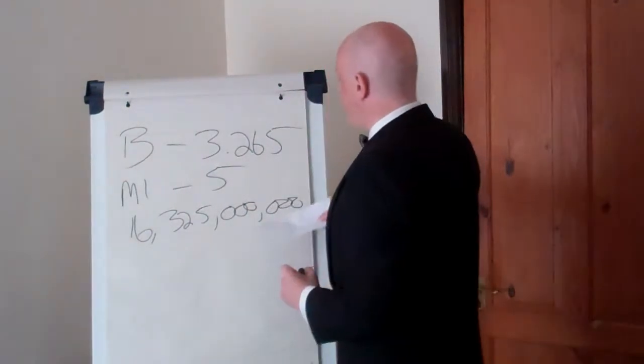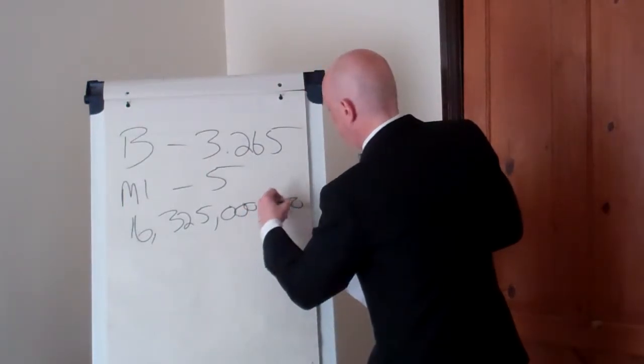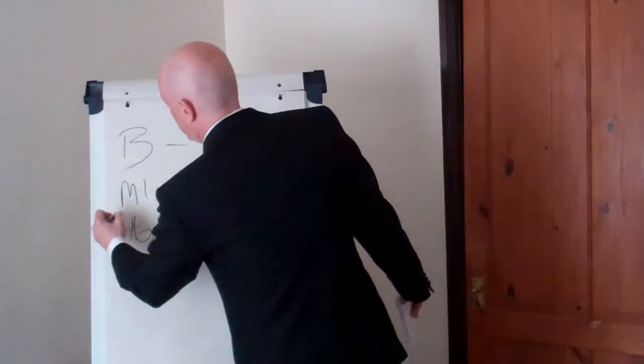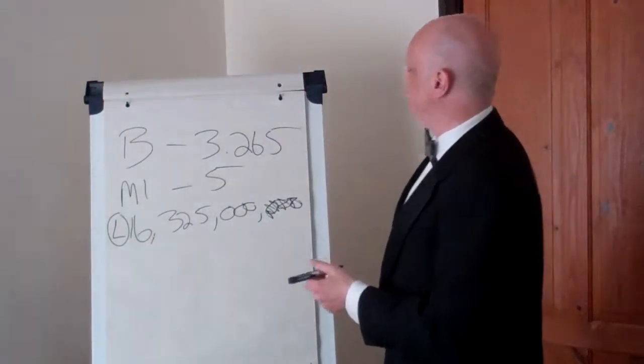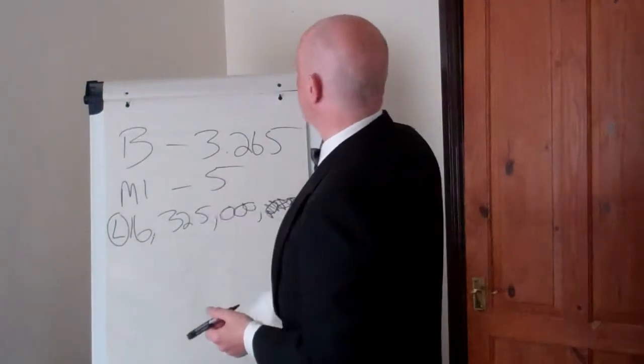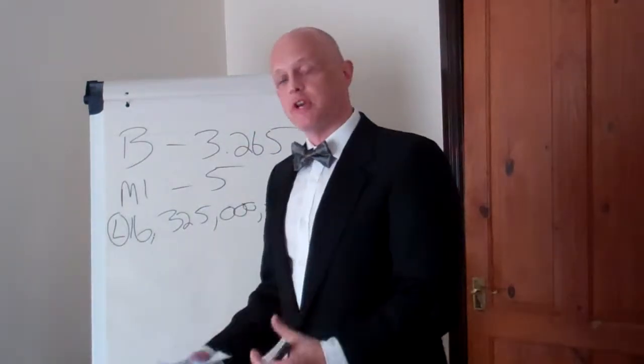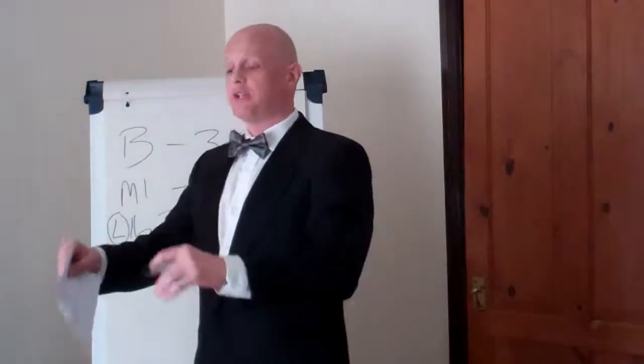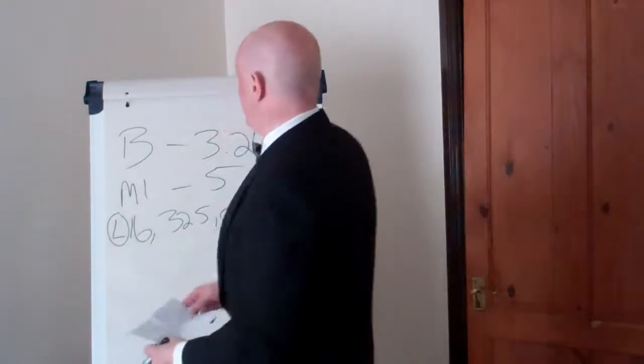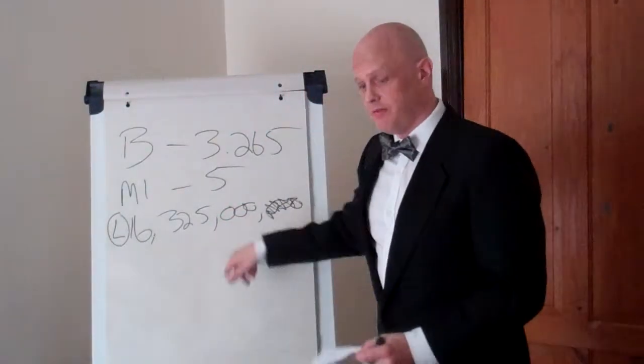Now, we divide that by 1,000, and we end up with the liters. That means we have 16,325,000,000 liters of jizz. If all the males in the world got together in a big backing circle, that's how many liters of jizz we'd have.